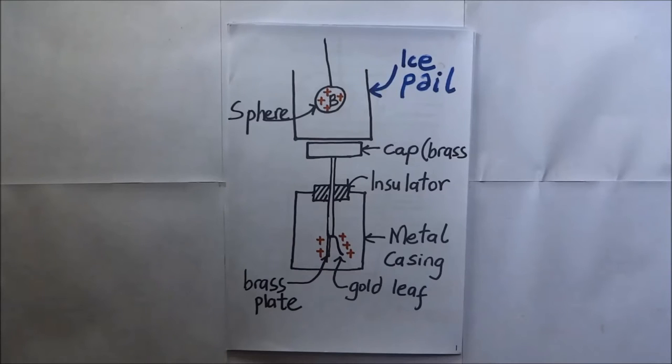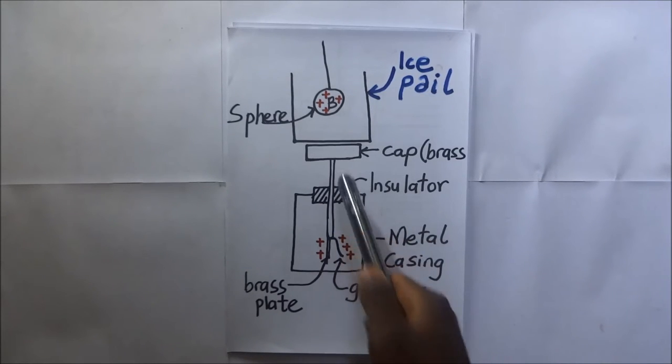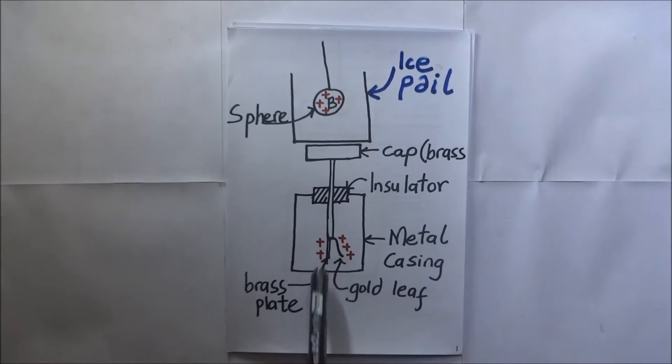Faraday's ice pail experiment will show that there is no charge residing inside the hollow conductor. It's Kisembo Academy and thanks for tuning in. This is the gold leaf electroscope. It has got a brass cup, a brass rod, a brass plate, and a gold leaf.